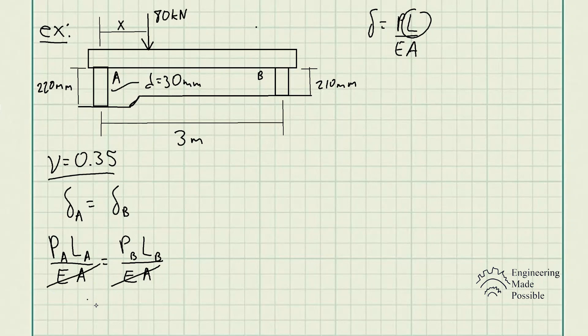Now we can solve for either of the forces and come up with a relationship. Let's solve for PA. So PA is equal to LB over LA times PB. This is one relationship we're going to be using.